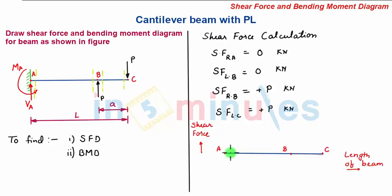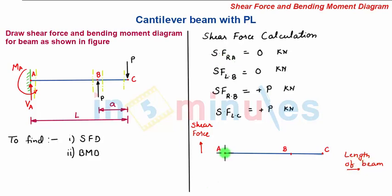We now plot the variation of shear force in this beam. This is the zero line of the beam; positive shear force will be above this line and negative shear force below it. On the x-axis we have the length of the beam. Shear force at A is zero, so it lies on the zero line. Shear force at the left of B is also zero, so the shear force between A and B is zero.